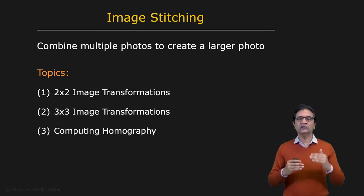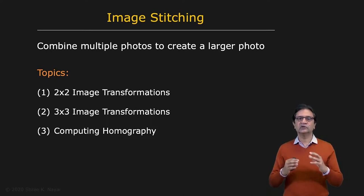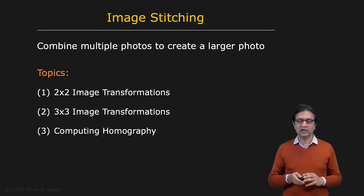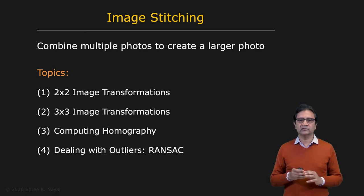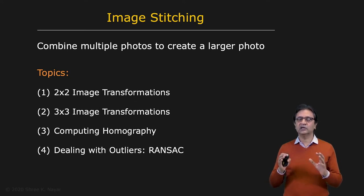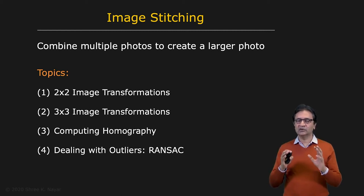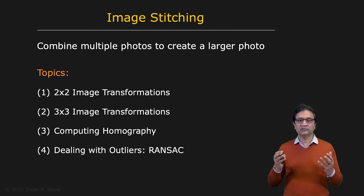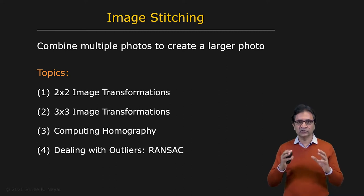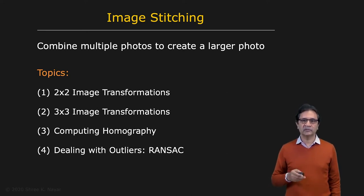In other words, your set of matching features will have inliers — valid pairs — and outliers — invalid pairs. We need a way of dealing with these outliers. That brings us to a very clever and useful technique called RANSAC. We'll show how RANSAC works and how, given matching pairs that include both inliers and outliers, as long as the outliers don't dominate, you can compute a valid homography and ignore the outliers. You can then further refine the homography using only the inliers.